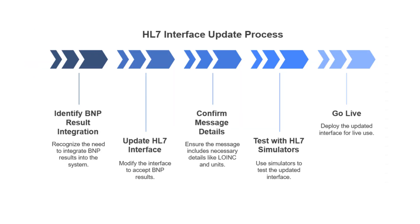Once you have that LOINC code firmly established, the next crucial step involves the integration team — the guardians of the data flow. They update the HL7 interface to accept the BNP result. HL7 is the global standard for exchanging clinical and administrative data. Within that standard, they confirm that the ORUR01 message — that's the observation result message — includes all the key data points: the LOINC code, the correct units, the result value itself, and importantly, the precise reference range. We use HL7 simulators to rigorously test this before anything goes live.